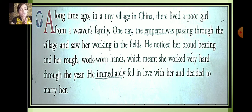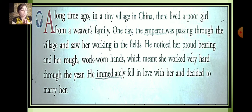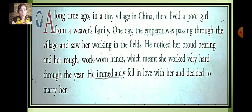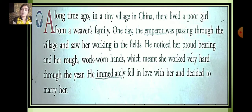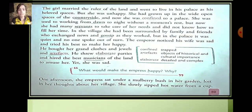So there was a village in China and there lived a poor girl from a weaver's family — the people who weave the clothes. One day the emperor was passing through that village and saw this girl working very hard in the field. He noticed her proud and rough work-worn hands, very rough because of working the whole day. So he immediately fell in love with her and decided to marry her. And then the girl married the ruler of the land.